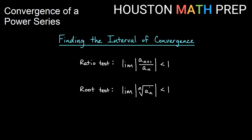We want to compare these to a geometric series. When the absolute value of the ratio is less than 1 — in other words, when r is between negative 1 and 1 — that's when we have geometric convergence. The ratio and root tests basically tell us when an infinite series behaves like a geometric series, so we'll be looking for a limit between negative 1 and 1.